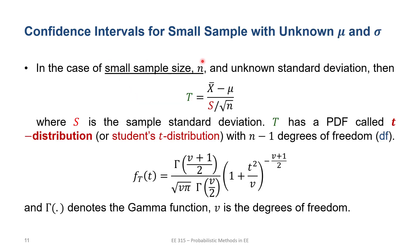For the case of unknown mu and sigma with a small sample size and unknown standard deviation s, we define t to have a t-distribution. It will not be normal because we cannot invoke the central limit theorem; instead it follows the Student's t-distribution with n minus 1 degrees of freedom. The PDF involves the gamma function, where v represents the degrees of freedom equal to n minus 1.